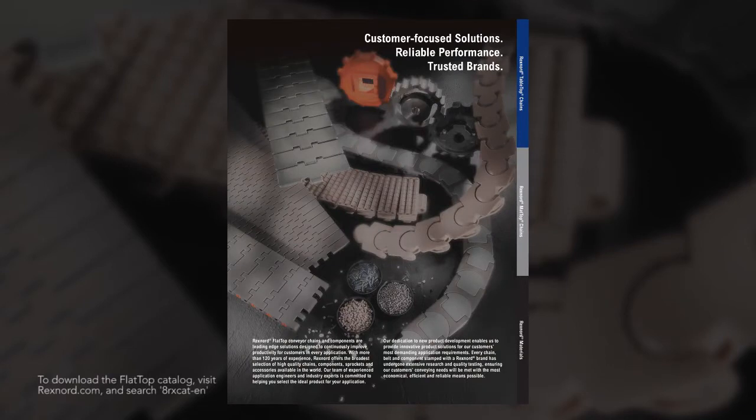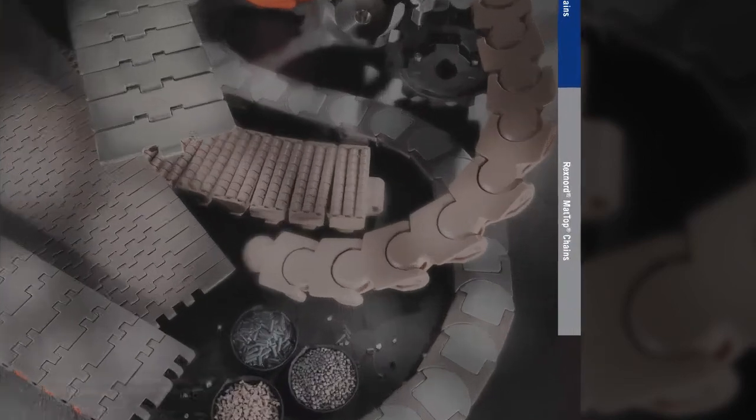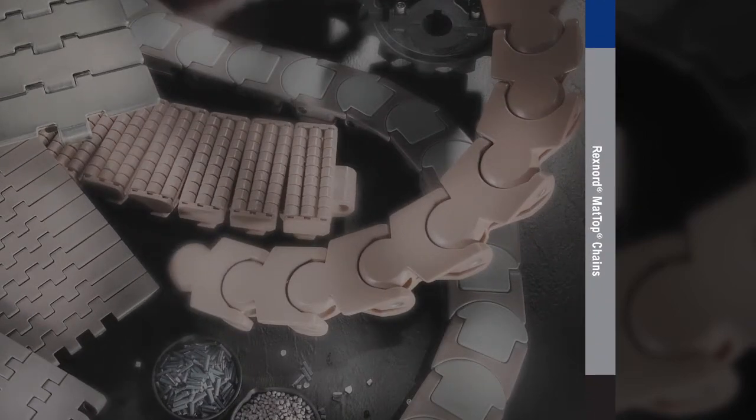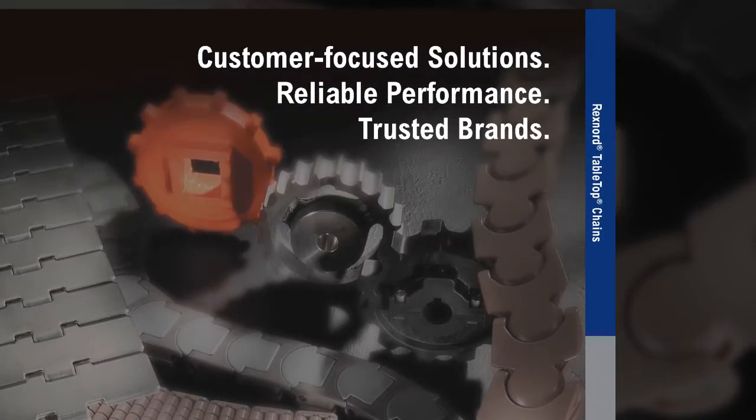The Flattop catalog is a great resource to help with chain identification. The catalog is broken up into different sections and each section is color-coded for added convenience. The gray section indicates MatTOP chains and the blue section refers to tabletop chains.